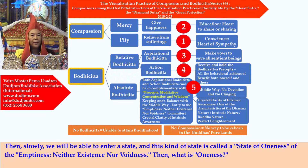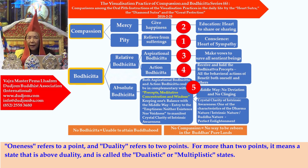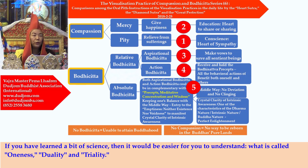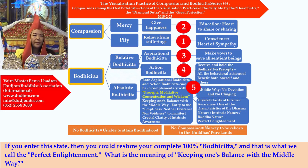Slowly, we will be able to enter a state called the state of oneness — the emptiness, neither existence nor voidness. Oneness refers to a single point, duality to two points, and more than two points is a multiplistic state. The emptiness, neither existence nor voidness, is talking about a state of oneness. If you enter this state, you could restore your complete bodhicitta — that is what we call perfect enlightenment. Keeping balance with the middle way means no deviation and no clinging.